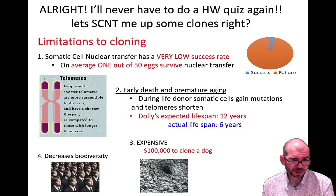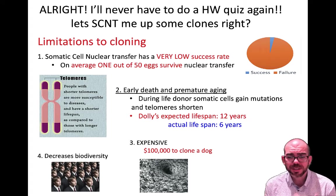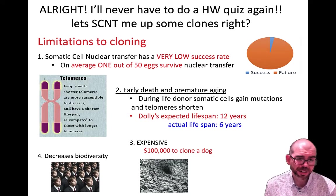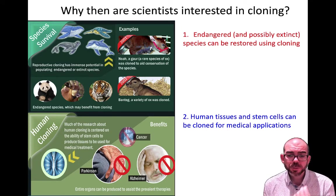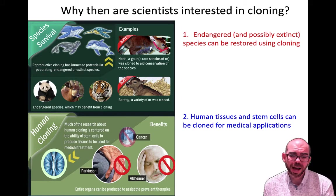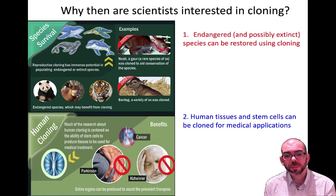If we continue to clone extensively, there's a big concern about reduced biodiversity. Species have persisted through time partly due to the selective advantage of being biodiverse — more genetic diversity means a species can withstand greater environmental changes. However, cloning is a possible avenue for saving endangered species near extinction. We could also potentially use cloning for medical purposes, such as cloning human tissues to make organs for transplantation or to repair damaged tissues.